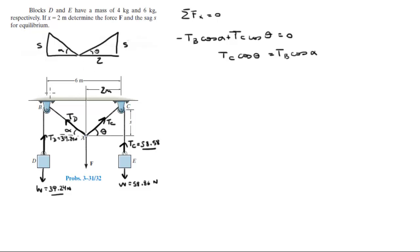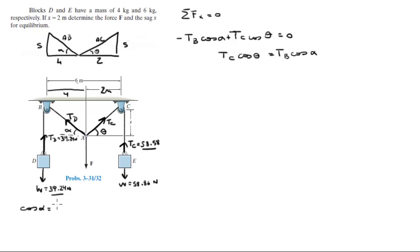You know that this is S, this is S. This is 2, and if this is 2, then this is 4 — since 6 minus 2 is 4. This segment is AC and this would be AB in length, which we don't know. So cosine of alpha is equal to 4 over AB.